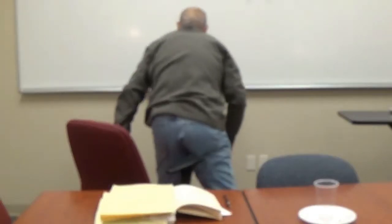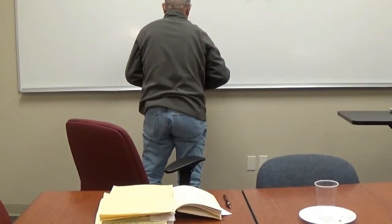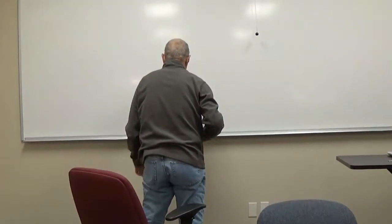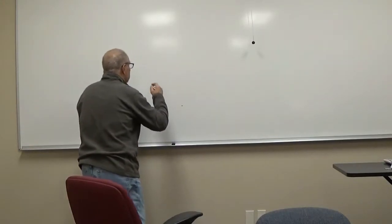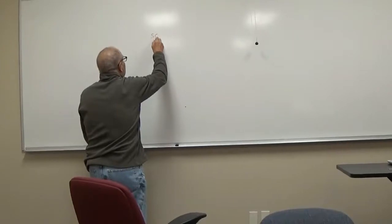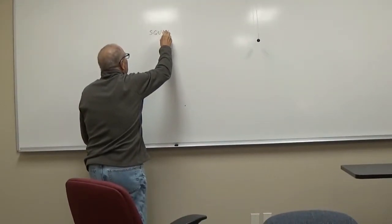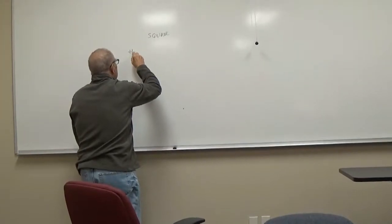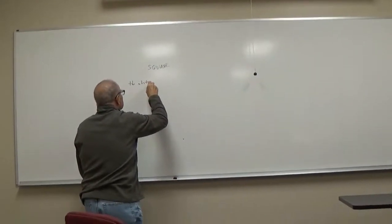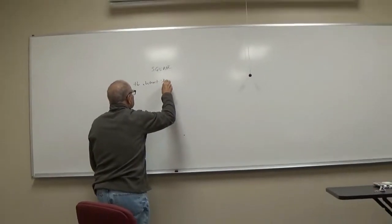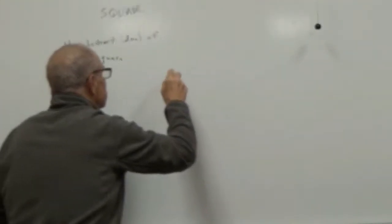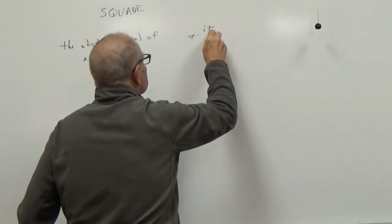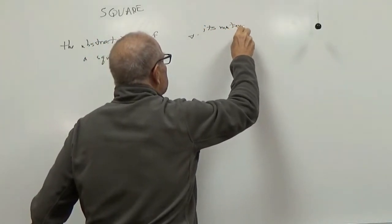Let's give examples of these things. What kind of board is this called? Whiteboard. Right. So we'll use the example of a square. We'll talk about the abstract ideal of a square and its material representation.